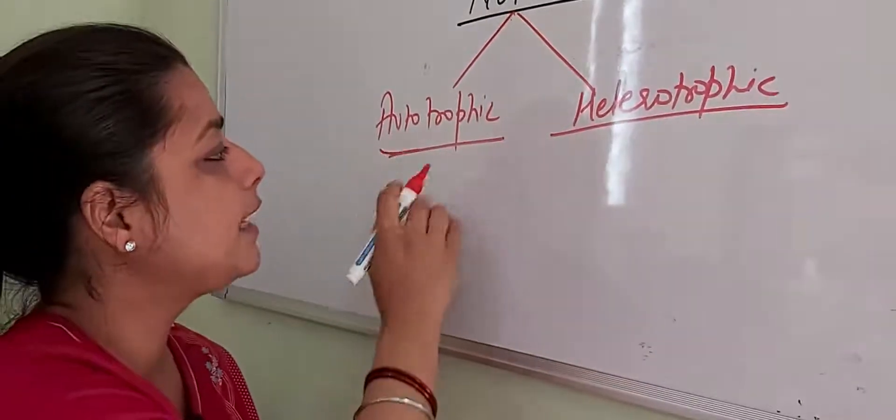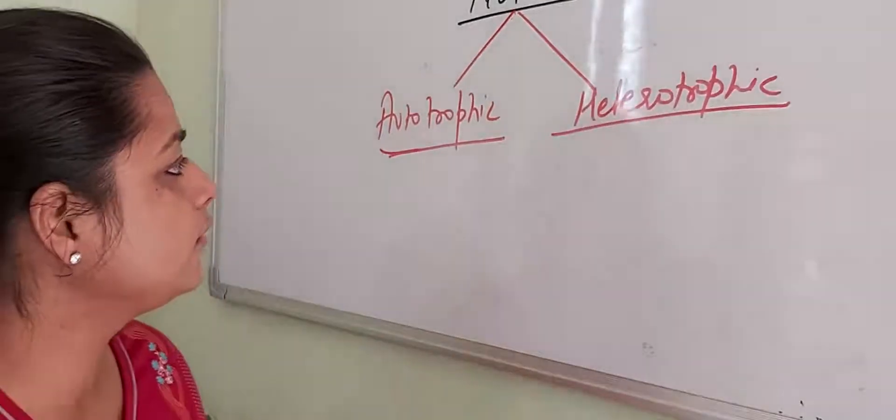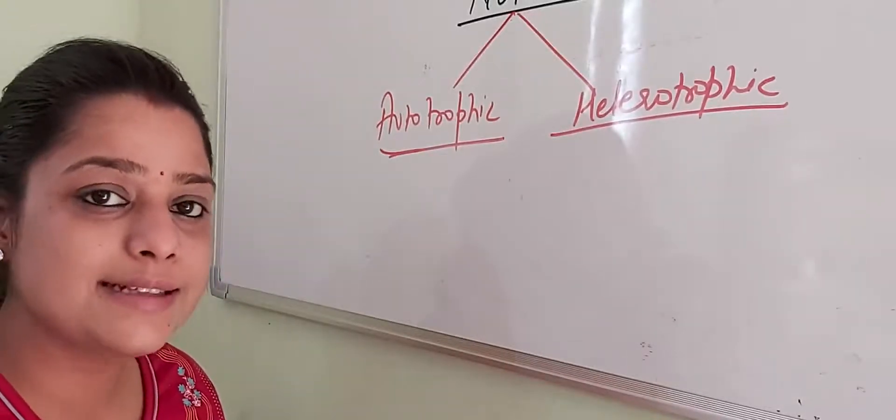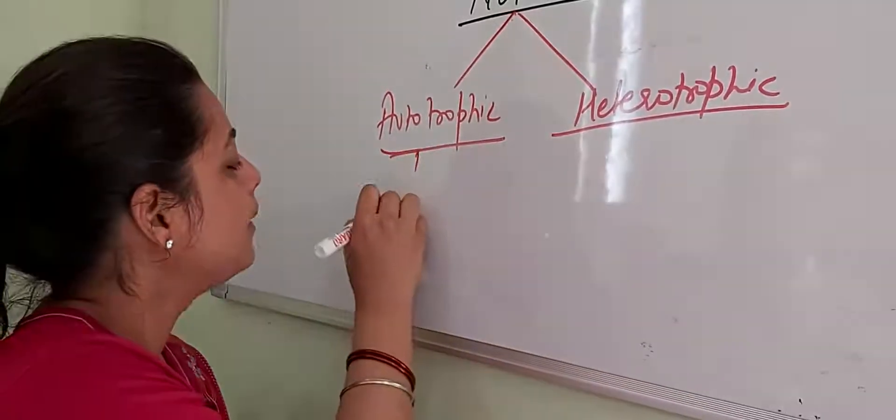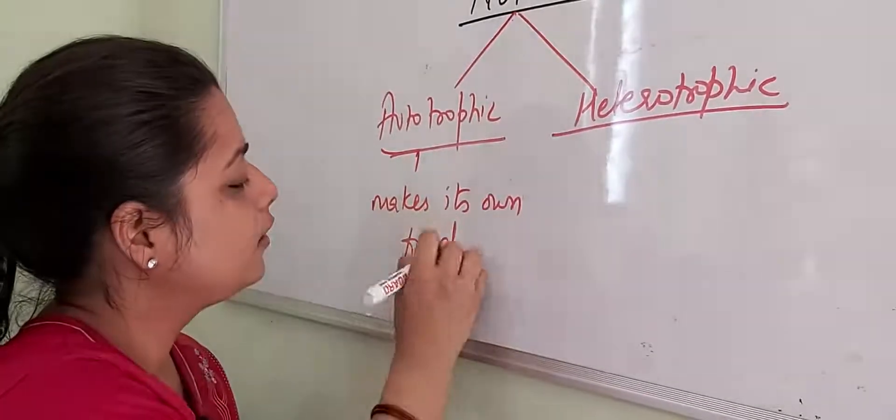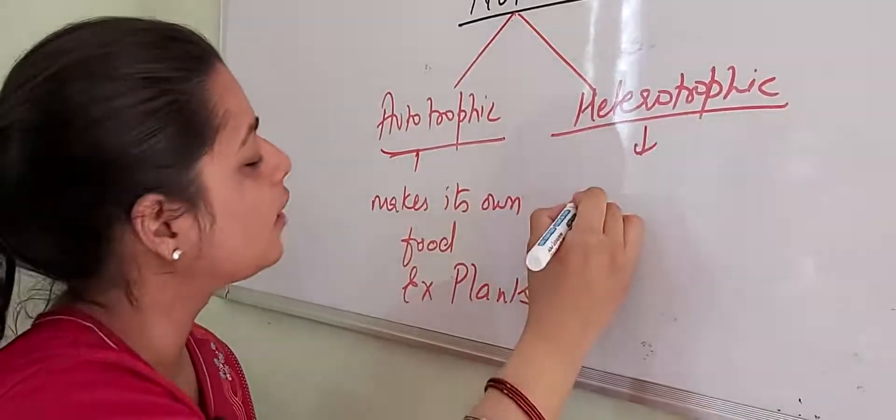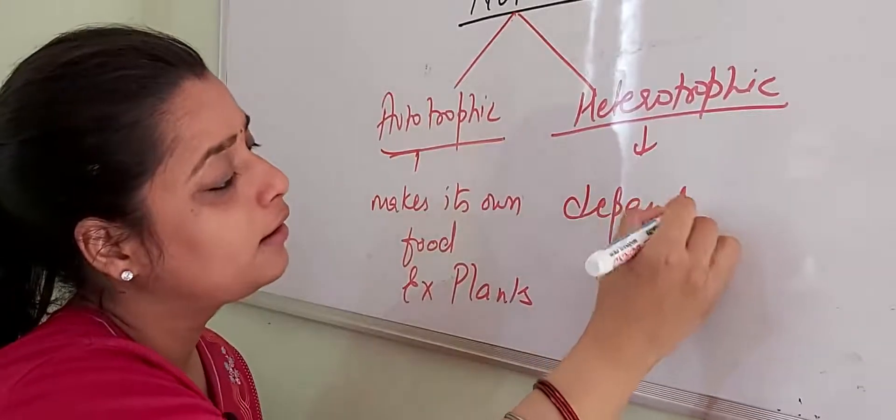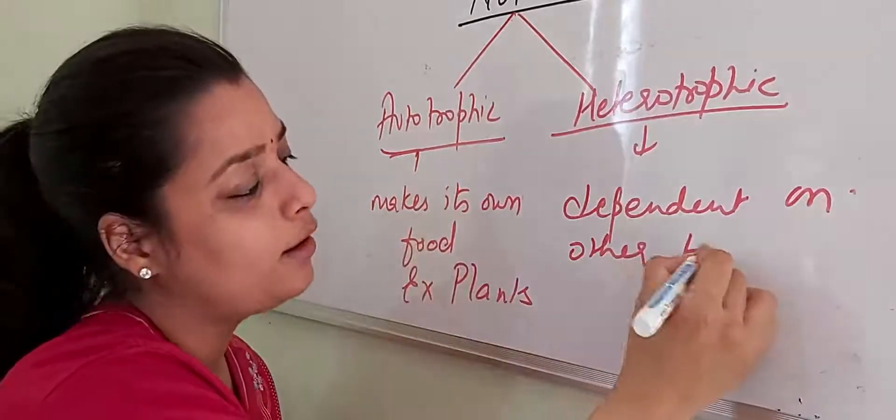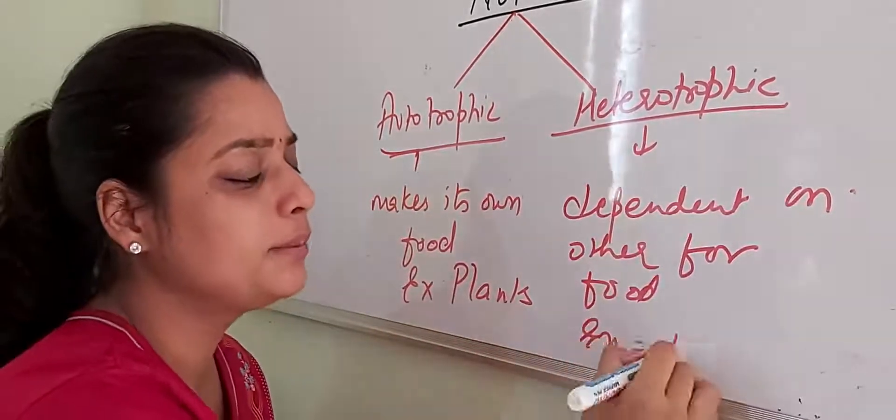Autotrophic means auto means self and trophic means taking in food or nutrition. So autotrophic is a mode of nutrition in which the organism makes its own food. For example, plants. Heterotrophic organisms are dependent on others for food, for example, animals.